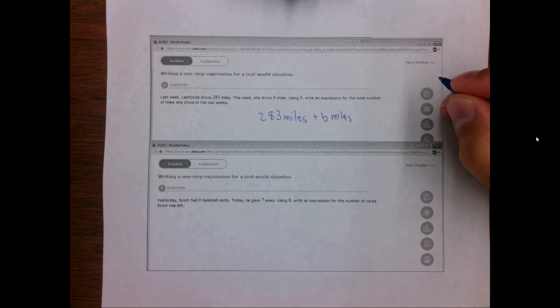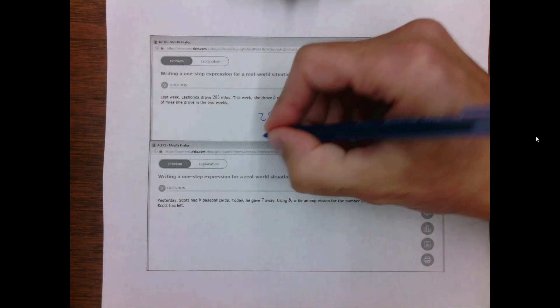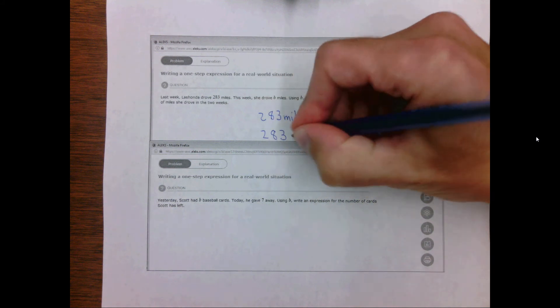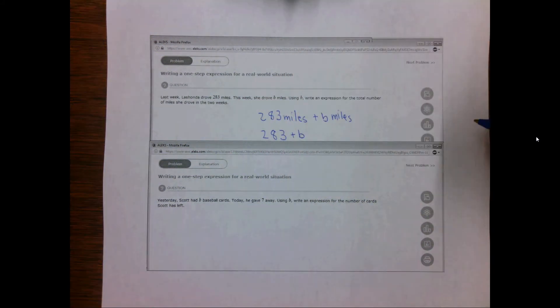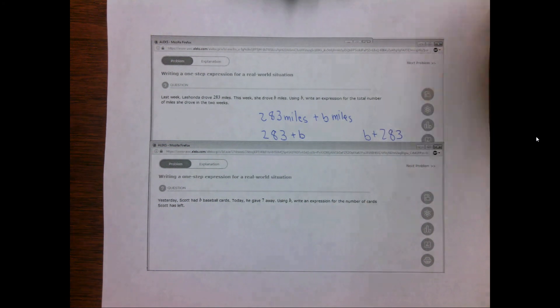Because Alex isn't looking for units, in this case both miles, this should probably be entered as simply 283 plus B. You could also write B plus 283. Both would be correct.